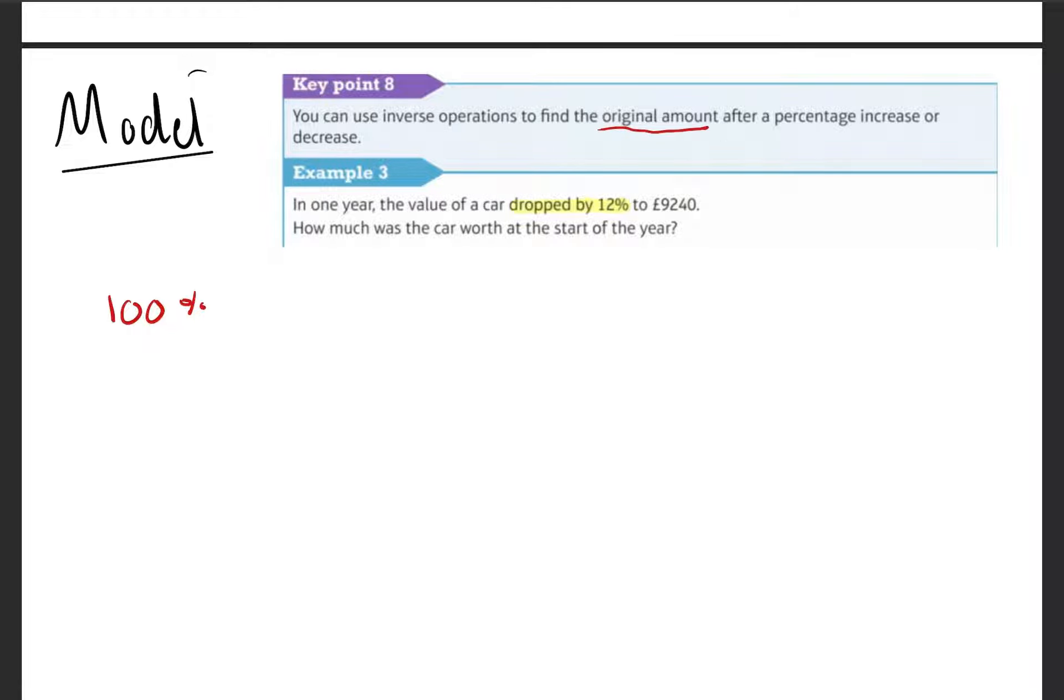So £9,240 equals 88%. So what we can do, our original value I'm going to call it X, times 0.88 equals £9,240.